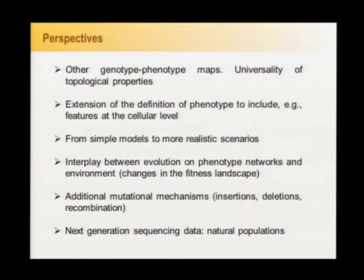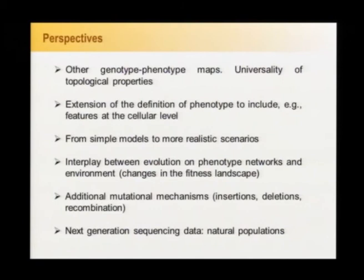There are many things to be done here. So to modify the genotype-phenotype maps, to see if there are any universality properties in those networks. So to extend the definition of phenotype to include other situations, to use more realistic scenarios and, in particular, to compare what we are seeing with data obtained from natural populations. And also see how networks are modified when, instead of point mutations, we use, for instance, recombination or other mutational mechanisms. These are the bunch of people actually working, now working on this project and different branches of it. And here I finish. I thank you.